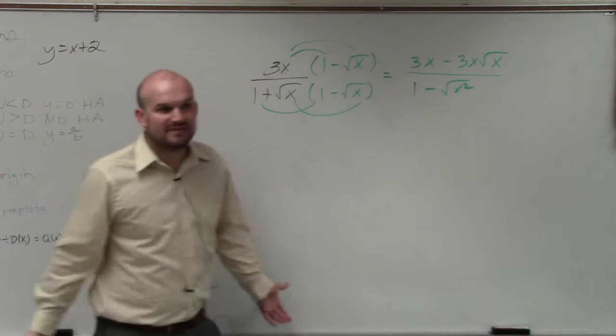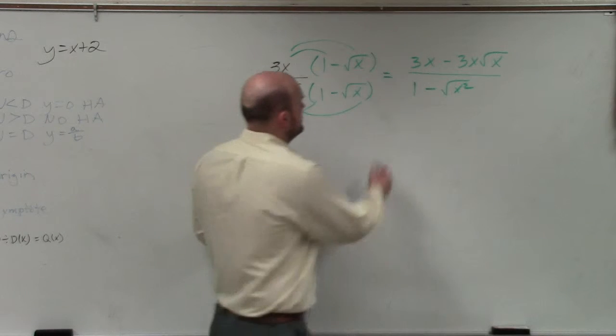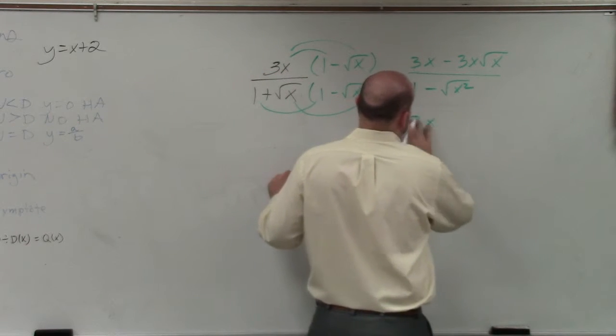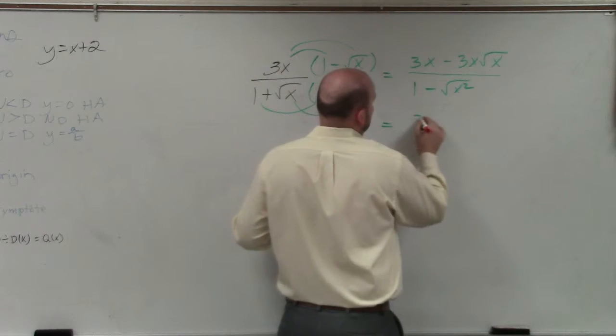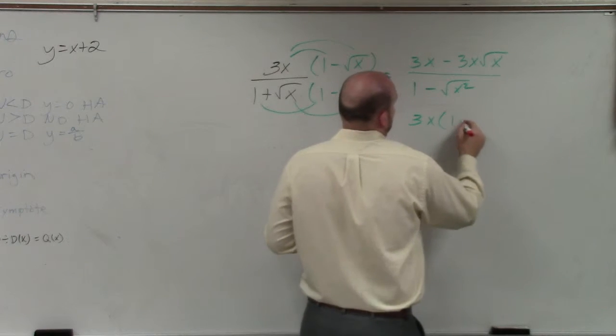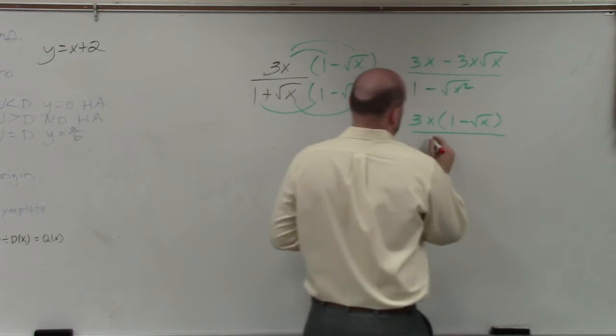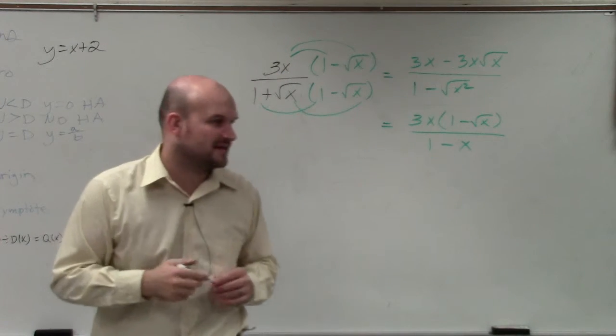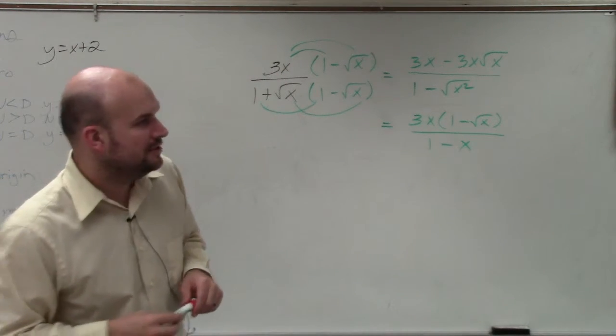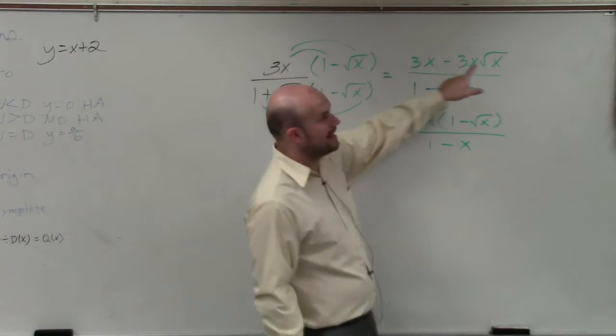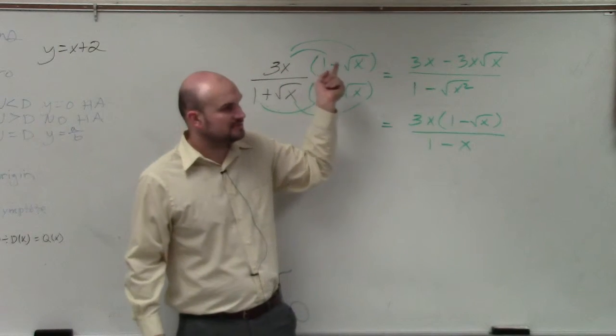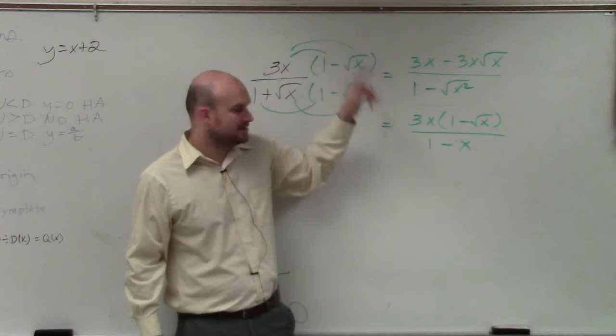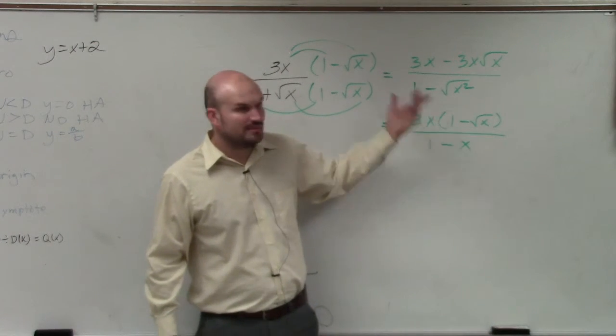Now, what's the square root of x squared? x. So my final answer is—let's factor out a 3x. I factored out the 3x up top. You can see they both share a 3x up top. So I factored that out because that's more of a simplified answer. And then I just left it as 1 minus x.